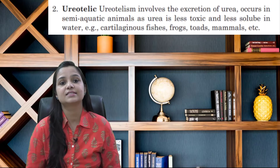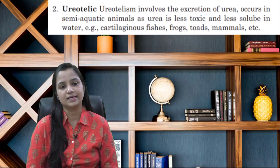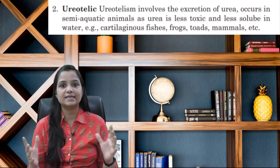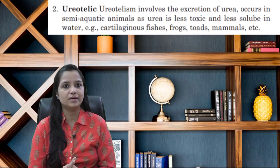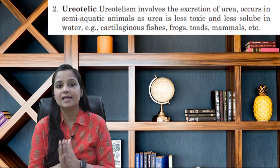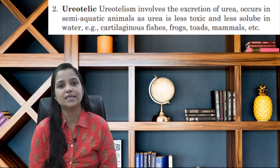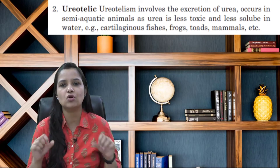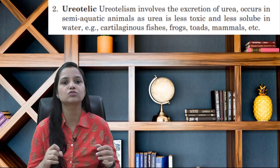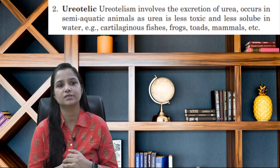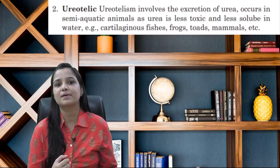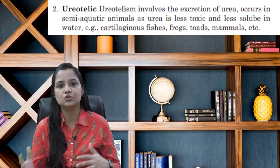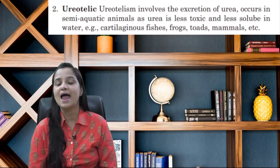The second one is the ureotelic. Ureotelism involves the excretion of urea, and it occurs in semi-aquatic animals, as urea is less toxic and less soluble in water. For example, cartilaginous fishes, frogs, toads, mammals, etc.